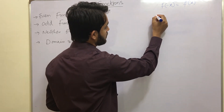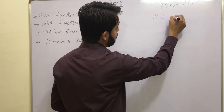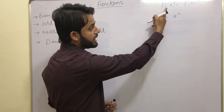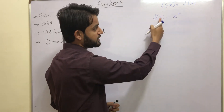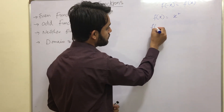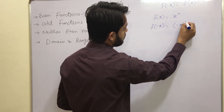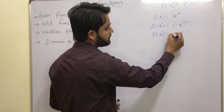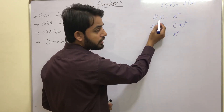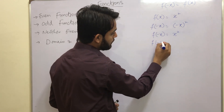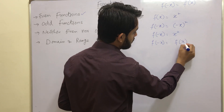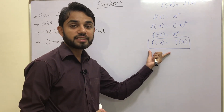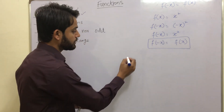Let's consider the example f(x) = x². We replace x with -x on both sides. So f(-x) = (-x)² = x², since we have an even power the minus becomes positive. And x² is basically your f(x). So by replacing x with -x we have come to the conclusion that f(-x) = f(x), and we can say that this function is an even function.